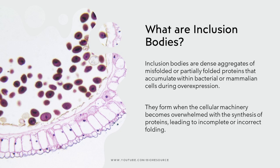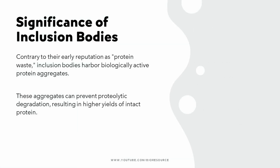Imagine a bustling cellular factory working tirelessly to churn out proteins. But sometimes this bustling activity results in misfolded or partially folded proteins. That's where inclusion bodies step in. These structures are dense clusters of protein that form when the cellular machinery becomes overwhelmed, leading to incomplete folding.